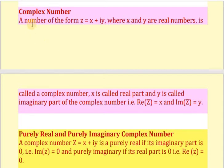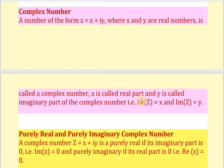We will represent the complex number as z and its form is x plus iy. You can also call it a plus ib — there is no wrong in that. Here x and y, or a and b, are real numbers. x is called the real part and y, associated with iota, is called the imaginary part. It denotes Re(z) equals x and Im(z) equals y.